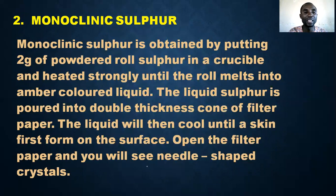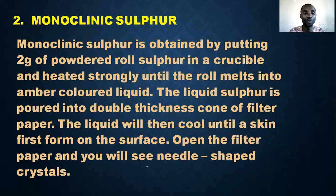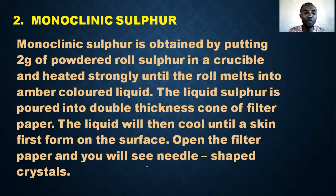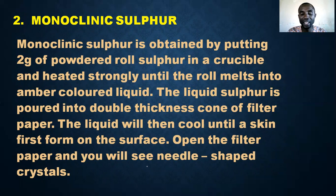The next allotrope is monoclinic sulfur. It is obtained by placing two grams of powdered roll sulfur in a crucible and heating it strongly until the sulfur melts into an amber-colored liquid. The liquid sulfur is poured into a double-thickness cone of filter paper and left to cool until a skin first forms on the surface.